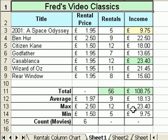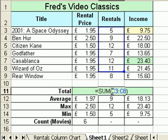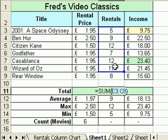At the moment that's not working properly. If I select any one of these calculations here - I'll just go for the total value in the rentals column and double click - we get a blue box that goes around the values in the rentals column to indicate which values are being included. So the formula is equals sum, and then in brackets, C3 to C8. So it's adding up values from 2001 down to Wizard of Oz, but it's not including the value for Rear Window, the one I added in an earlier video.